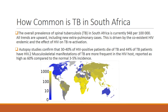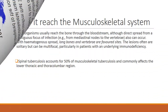The overall prevalence of spinal tuberculosis in South Africa is currently 948 per 100,000. Trending upward, this is driven by the co-existent HIV endemic and the effect of HIV on TB reactivation. Musculoskeletal manifestations of TB are more frequent in the HIV host, reported as high as 60% compared to the normal 3-5% incidence.